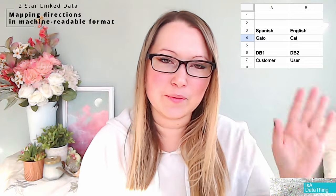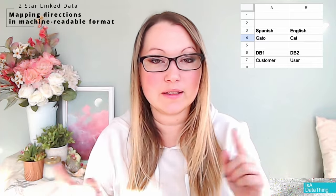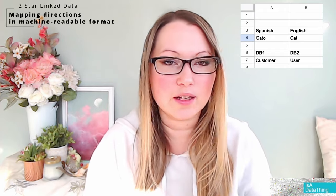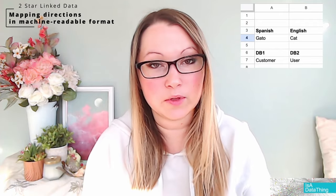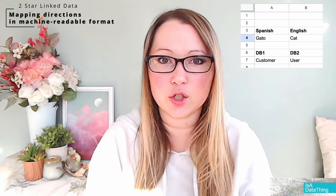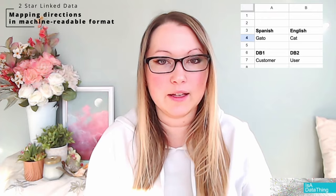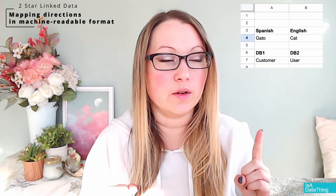Level two is where a lot of people are when making a mapping file — a CSV or Excel file. You have one column for one database or schema and another column for the other, saying how these things relate. For example: 'customer' in database one is 'user' in database two. These are often used when working with subject matter experts who aren't data scientists but understand the data — they can go into Excel and say this field connects to that field.